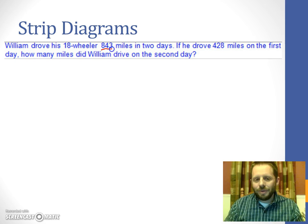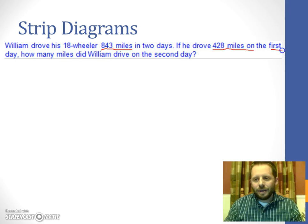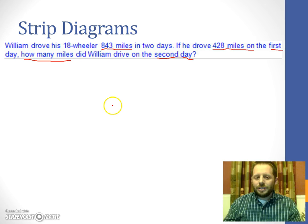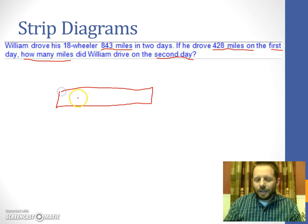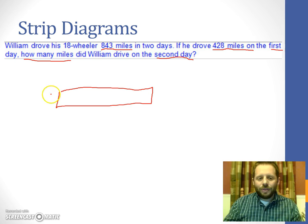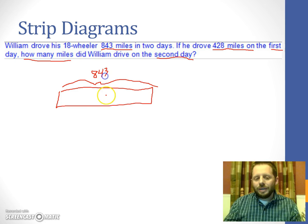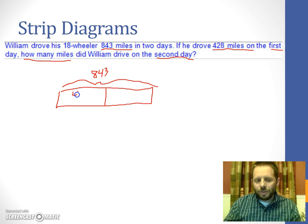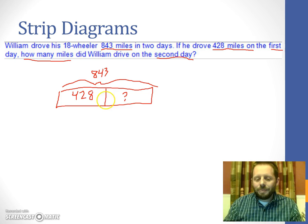This is the other one we looked at just a moment ago, 843 miles driven on the weekend, 428 miles on the first day. And the question is how many miles on the second day? So for this strip diagram, you drove 843 miles total for the weekend. So that should be our total number for our strip. Now that weekend's made up of two days. We have the first day, which was the 428 miles. And we have the second day, which is what we're trying to find.